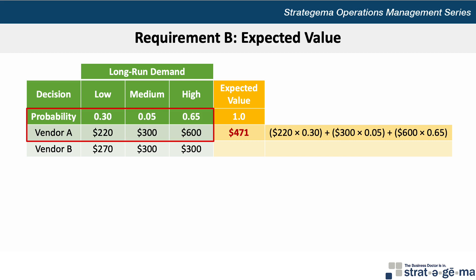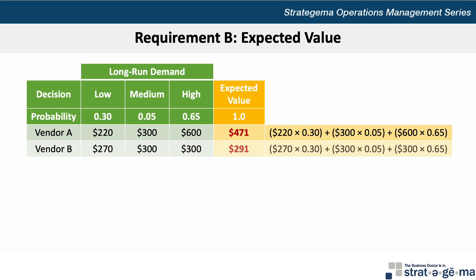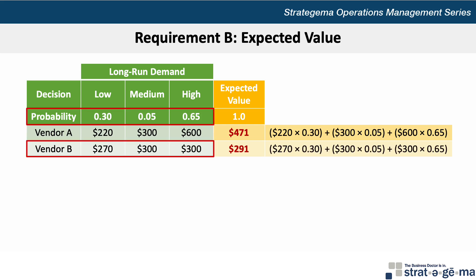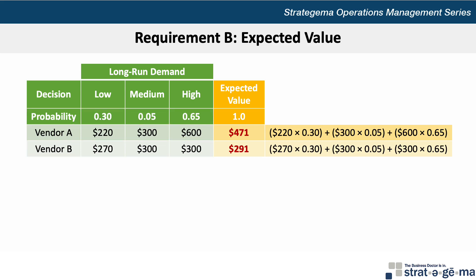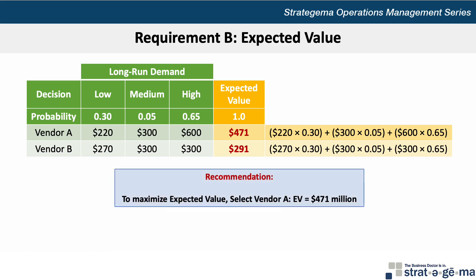Remember to make sure your order of operations is correct. For vendor B, we would take 270 times 0.3, plus 300 times 0.05, plus 300 times 0.65, to come up with $291 million. Thus, we can conclude that the expected value of choosing vendor A is $471 million and the expected value of choosing vendor B is $291 million. And if Southland management is looking to make a decision based on maximizing the expected value, then vendor A should be selected.